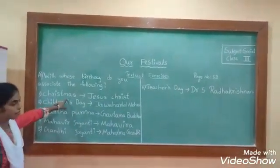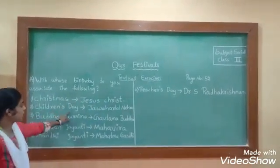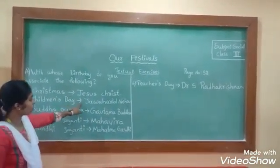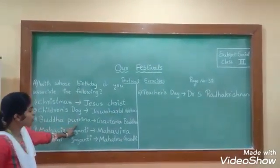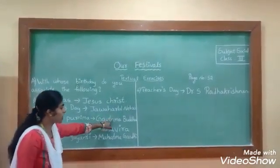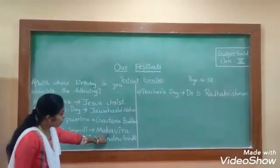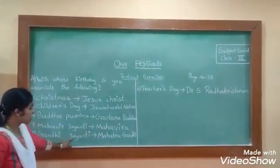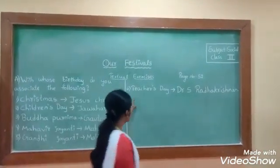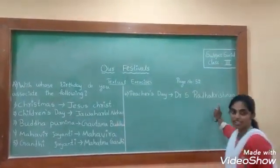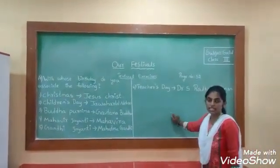So this is the first exercise. To recap: Christmas is celebrated on behalf of Jesus Christ's birthday. Children's Day is celebrated on behalf of Jawaharlal Nehru's birthday. Buddha's Day is celebrated on behalf of the Buddha. Mahavir Jayanti — Mahavira. Gandhi Jayanti — Mahatma Gandhi. And Teacher's Day — Dr. S. Radhakrishnan. Please note down all of these in the textbook.